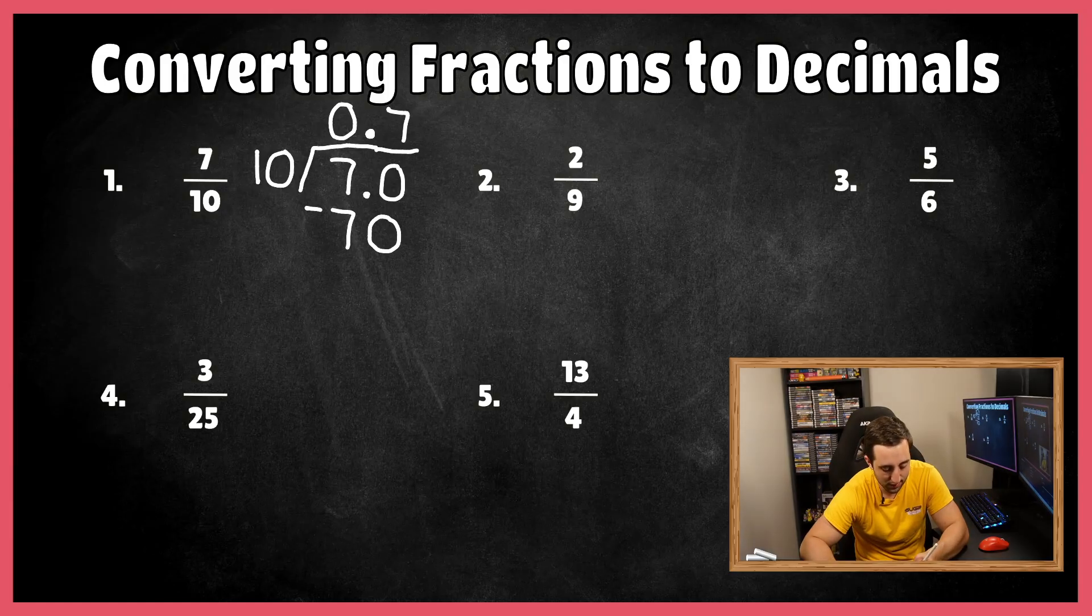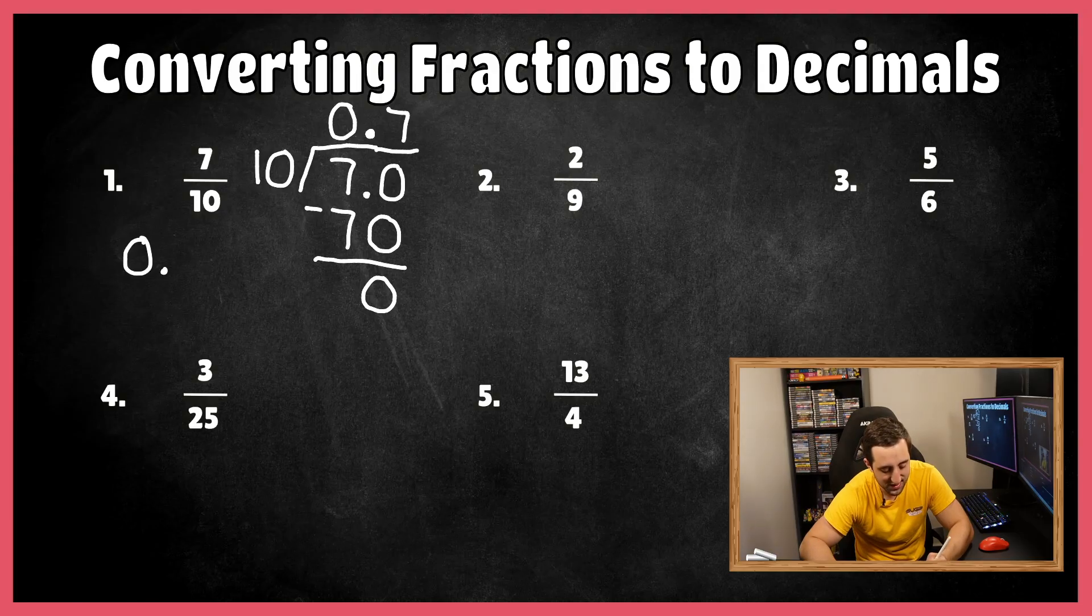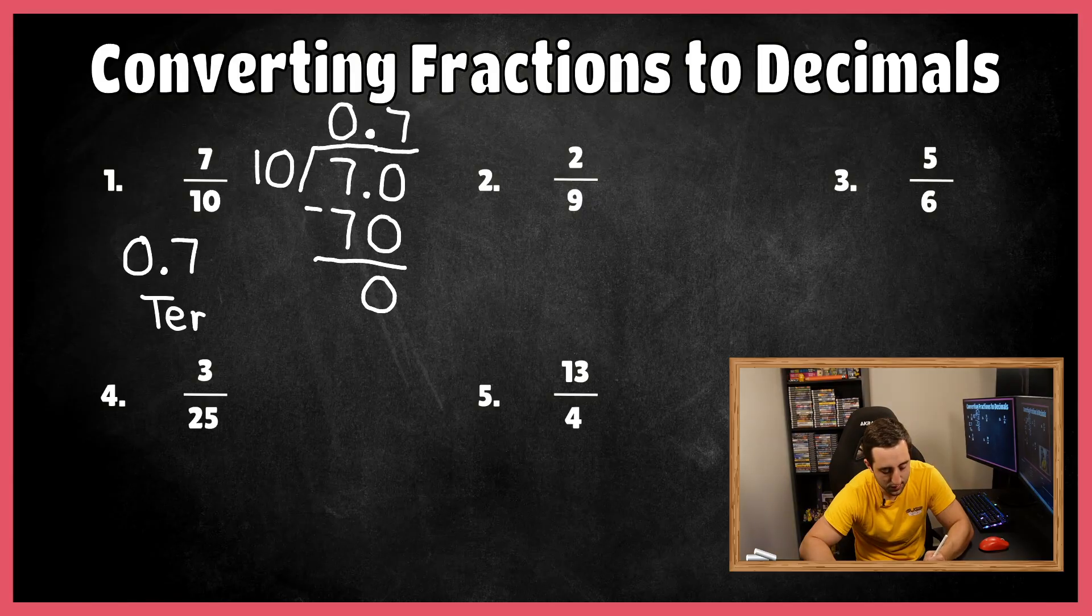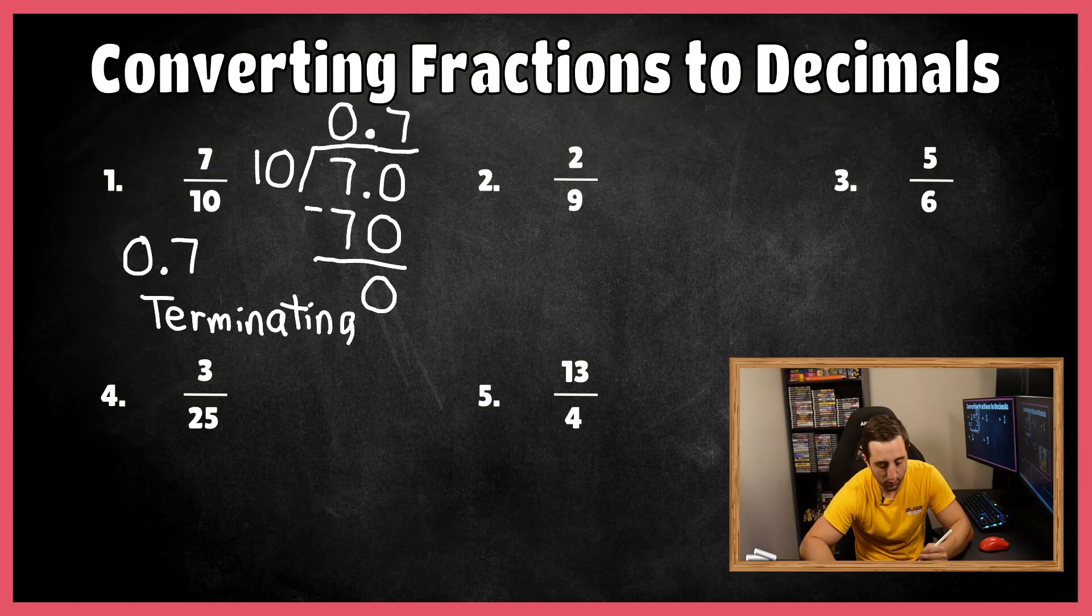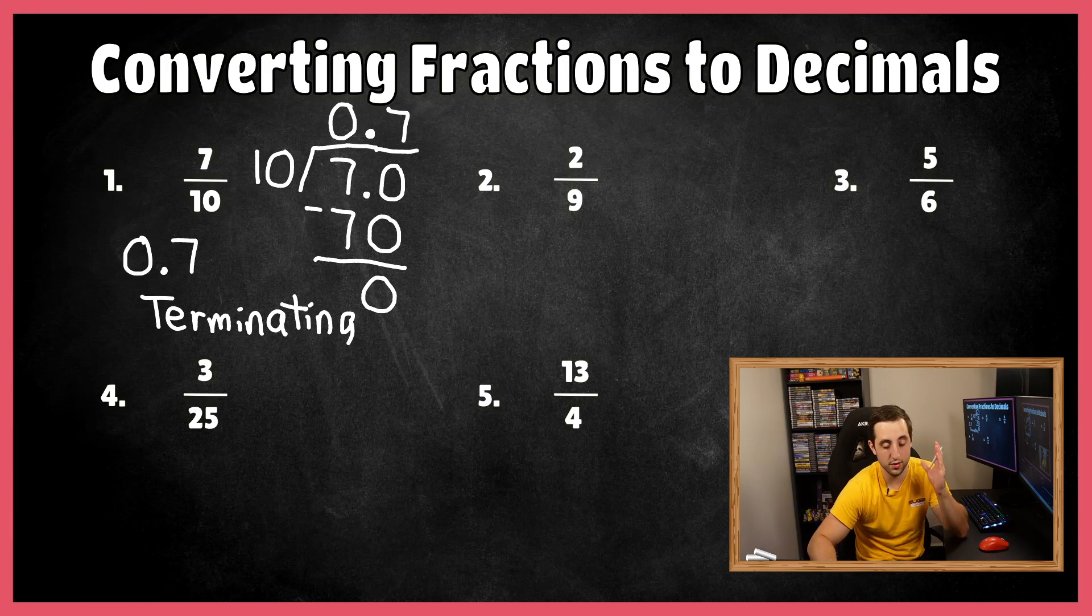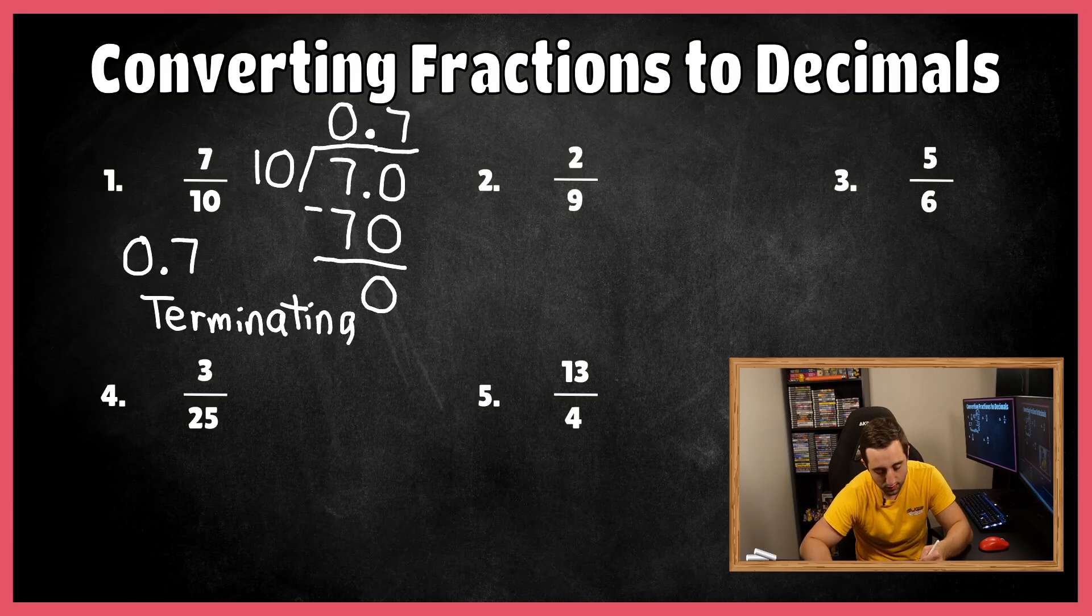We go ahead and subtract here. 70 minus 70 is 0. And our final answer is 7 tenths, which is 0.7. This is known as a terminating decimal. I'll write that out just in case you want some more terminology. Terminating, which means the decimal stops. It doesn't go any further than 7. As soon as you run out of numbers, terminating decimal right off the bat.